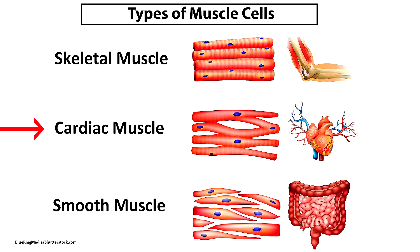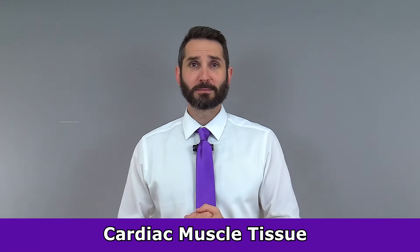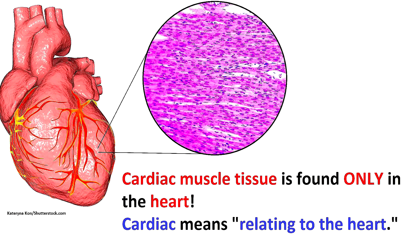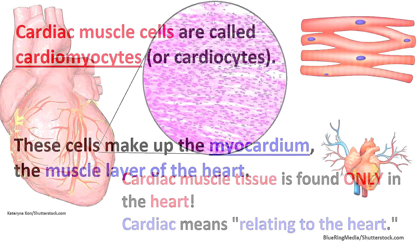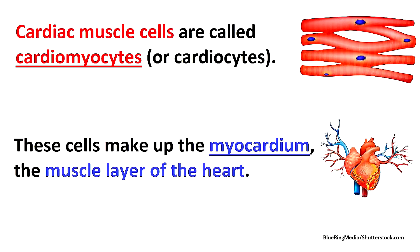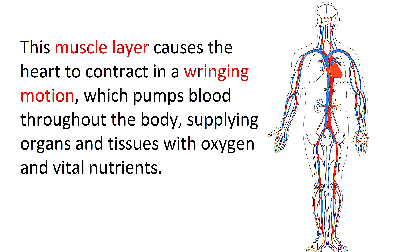Now let's talk about cardiac muscle tissue. Out of all three types of muscle tissue found in the body, cardiac muscle tissue is near and dear to my heart — because it's in my heart. In fact, that is the only place you will ever find cardiac muscle tissue, and the very word cardiac literally means relating to the heart. The cells that make up cardiac muscle are called cardiomyocytes or cardiocytes, and together they make up the myocardium, which is the muscle layer of the heart. This muscle layer causes the heart to contract in a wringing motion, which pumps blood throughout the body supplying organs and tissues with oxygen and vital nutrients.